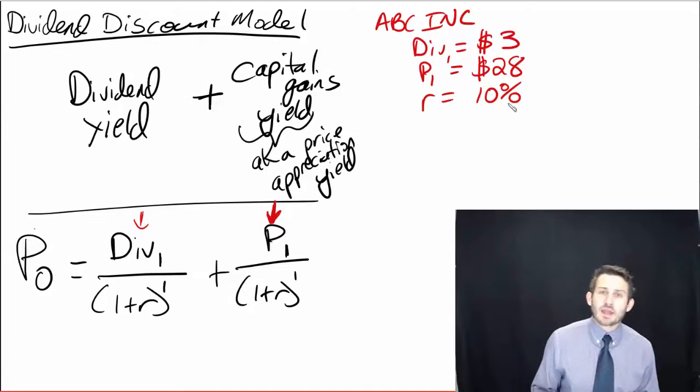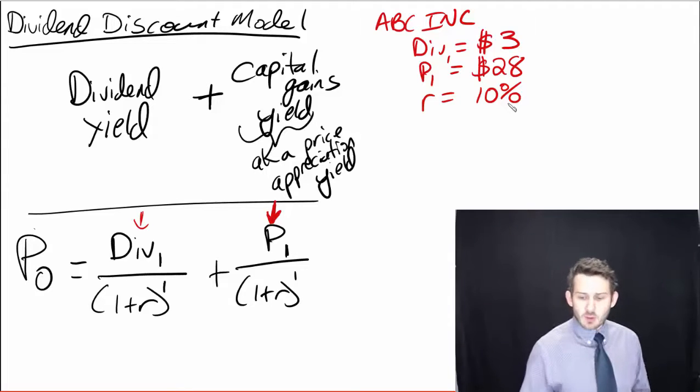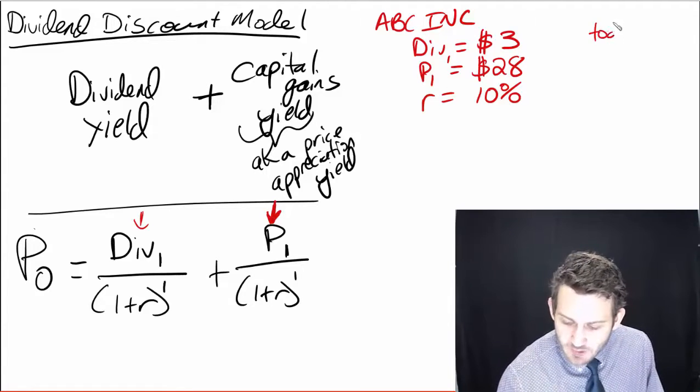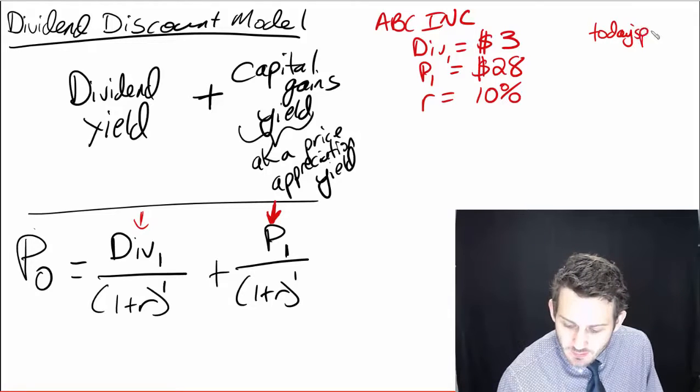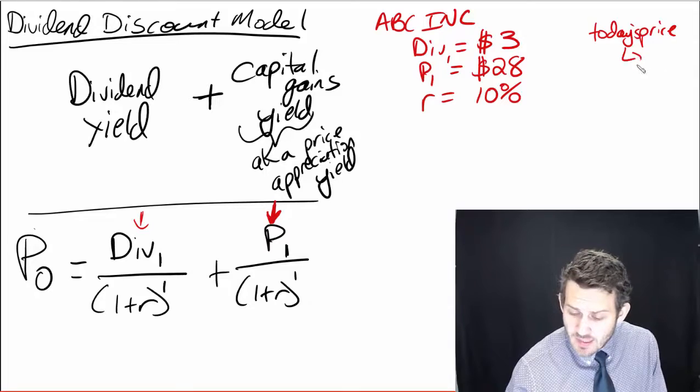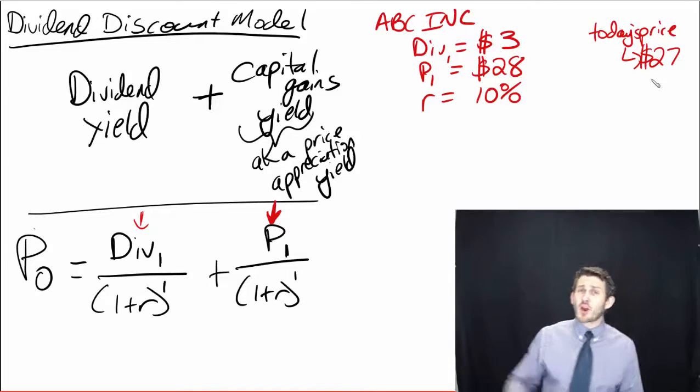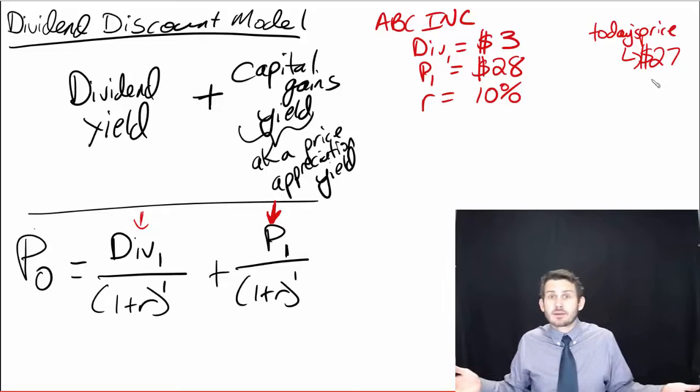So now we have enough information to figure out what our estimated value of the stock is today. And so our basic question here is that let's say today's price, the price it's selling for on the stock market is, say, $27. So we're going to try and figure out should I buy this stock or not.